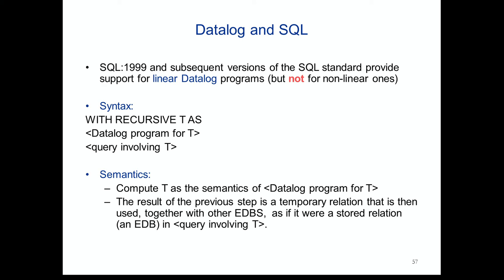Why does SQL restrict to linear Datalog? Linear programs are easier to implement — they can be implemented on a stack, as opposed to more complicated implementations for nonlinear recursion. The data complexity of linear Datalog is in NC, similar to transitive closure. Not every Datalog program is equivalent to a linear one: Cook's path system program is not linearizable, though transitive closure is.